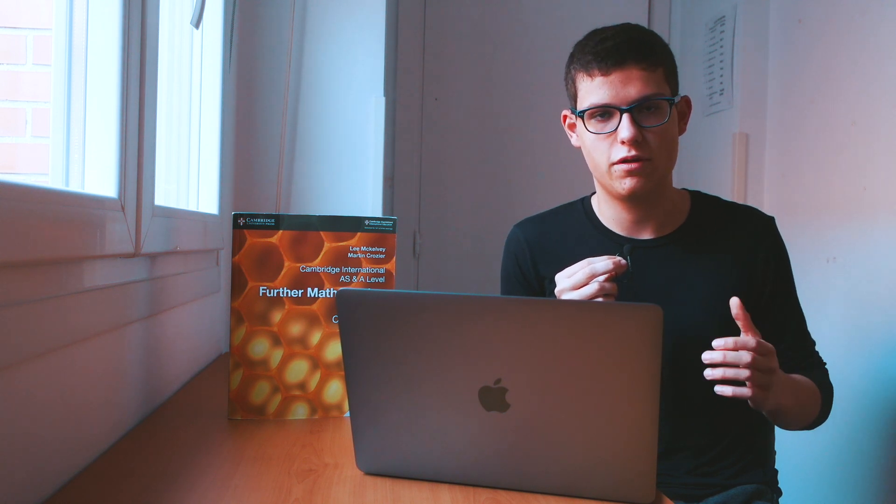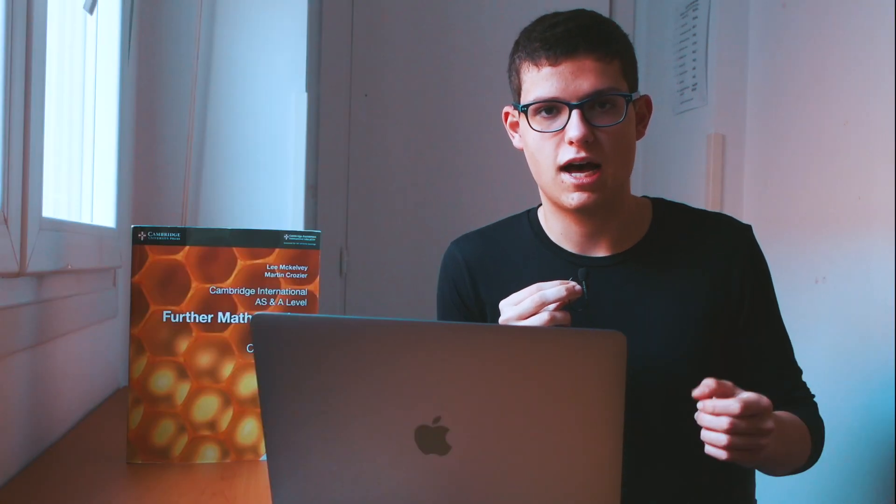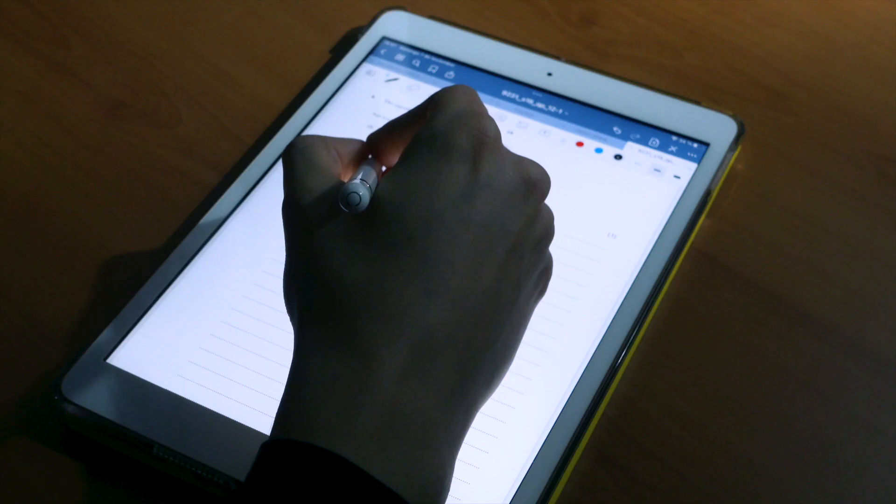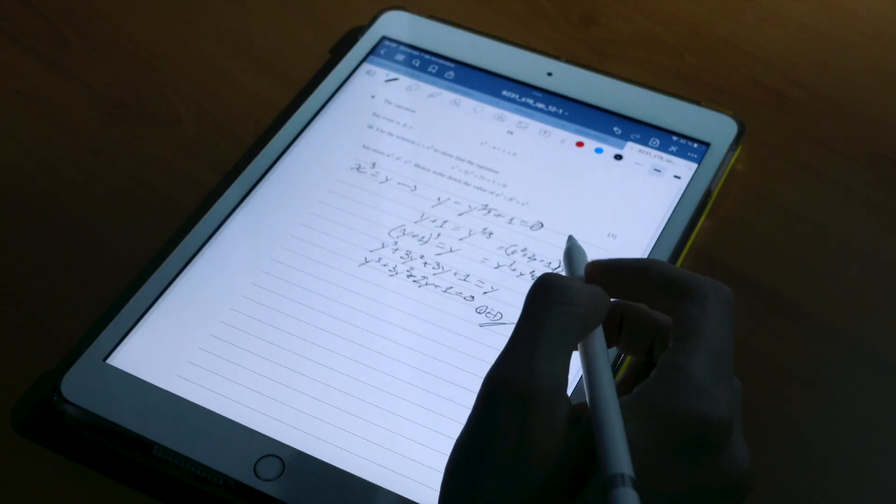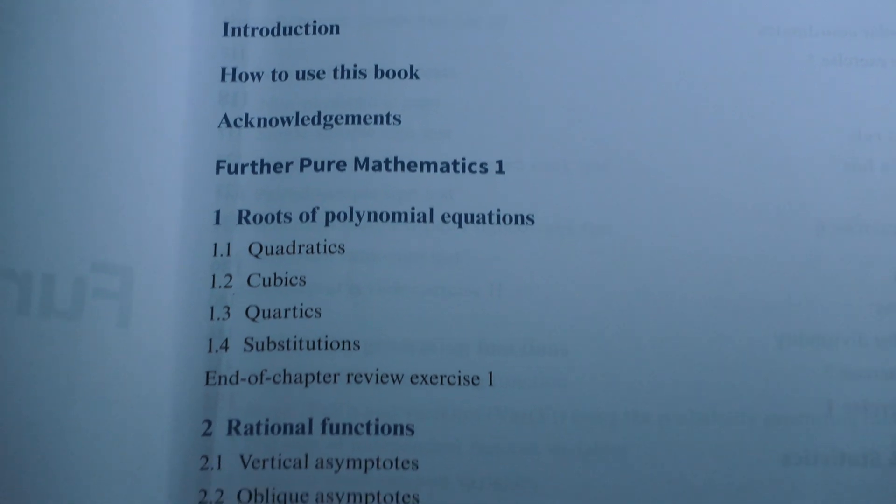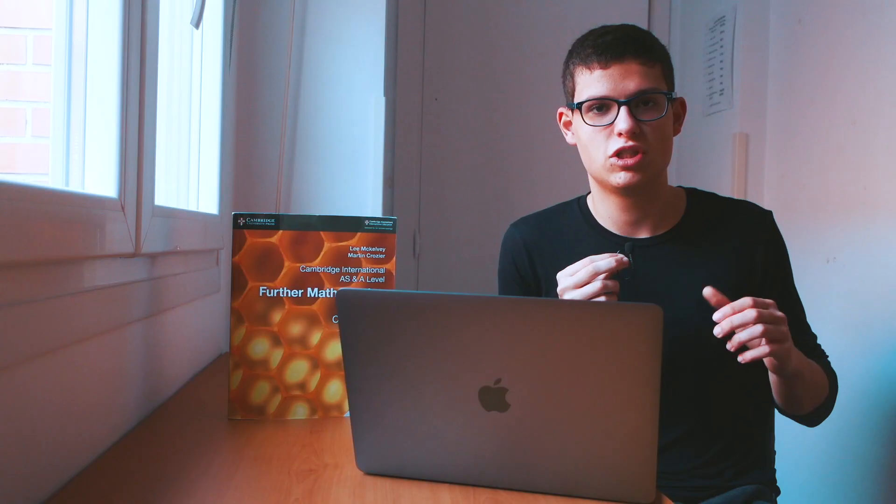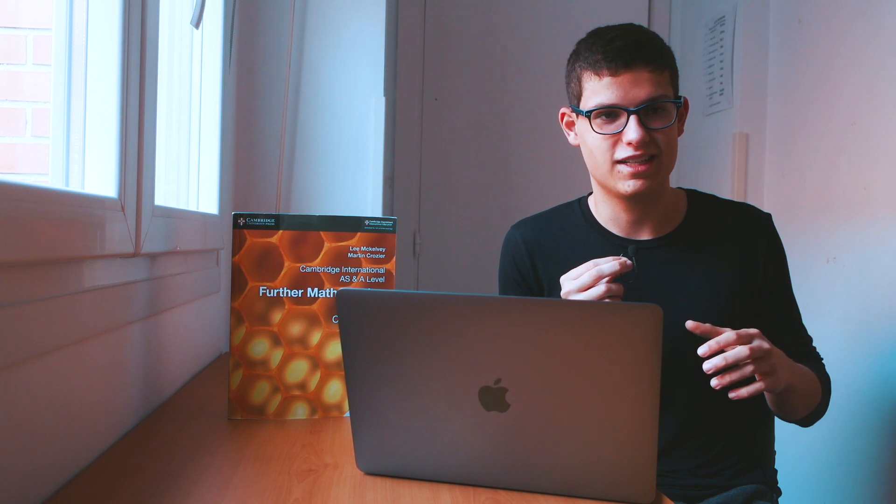These days, for example, at the same time that I am covering further statistics in class at school, I am also doing, apart from revising this at home, I am also doing my own revision of further pure mathematics one. I have already done roots of polynomials. I'm going to go with rational functions. So in the end, one topic a week is achievable because I'm working on two things at the same time and it's all right.